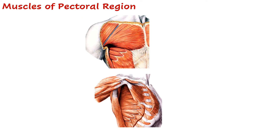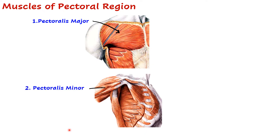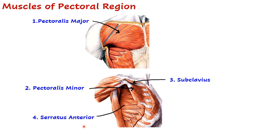Let us begin with the muscles of the pectoral region. There are four muscles and these are: pectoralis major, pectoralis minor, subclavius, and serratus anterior. Let us look at their nerve supply.